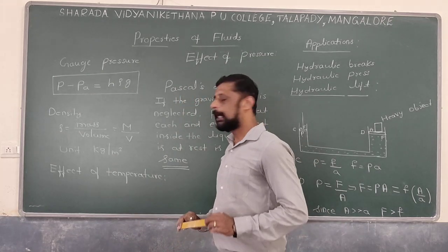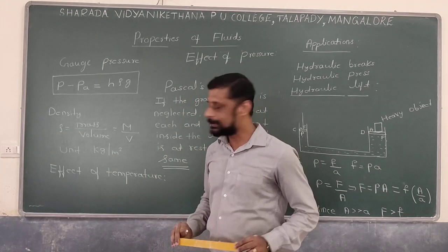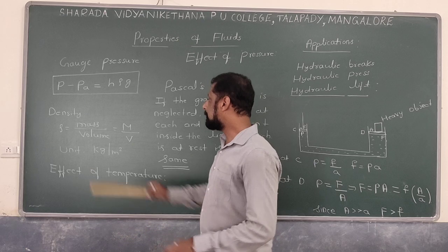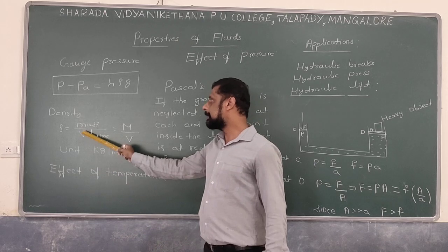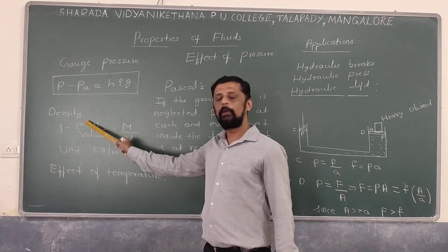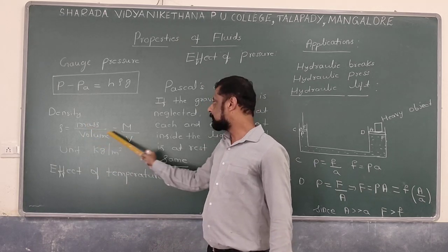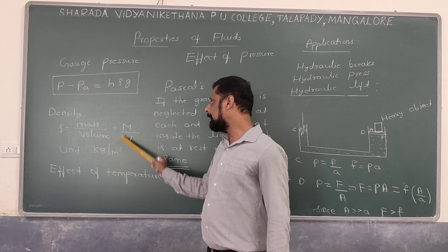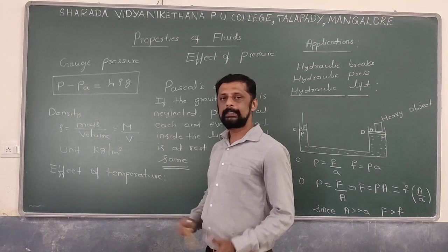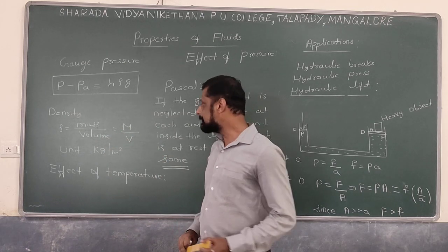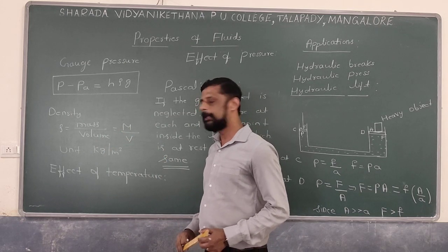Next, one important physical quantity is density. Density is defined as the ratio of mass divided by volume, i.e., ρ = M/V. Its SI unit is kg per meter cube.